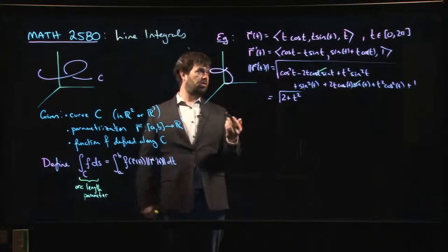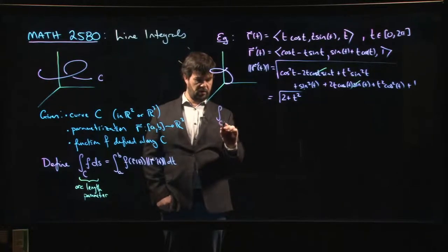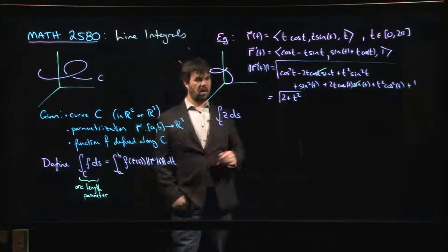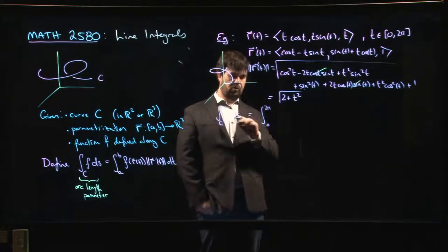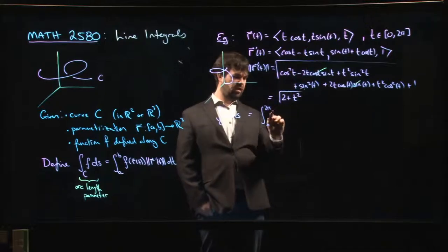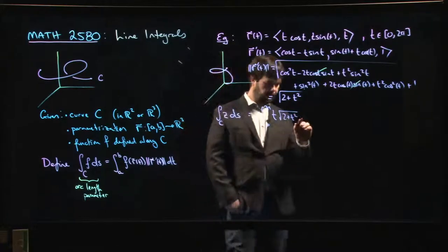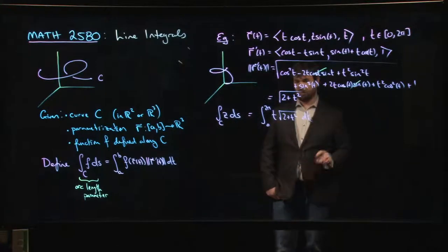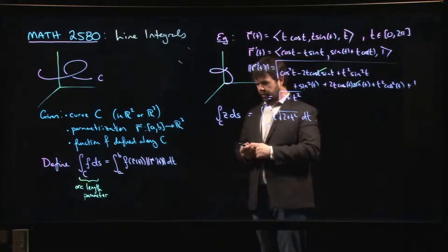So then if somebody said, hey, I want you to compute, let's say they want you to compute the integral over c of something like z ds, you can say, ah, I can do that. So it's the integral from 0 to 2 pi, so z in terms of t is just t, and then we multiply by R prime, square root of 2 plus t squared, and we integrate it with respect to t. That's not bad, we could do that one with a u substitution. I'm not going to bother doing it, but we could leave it at that. So we know how to do this.